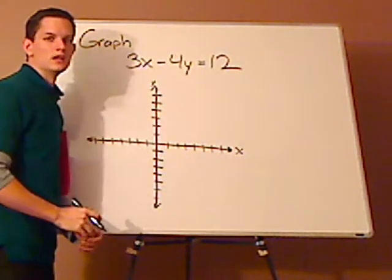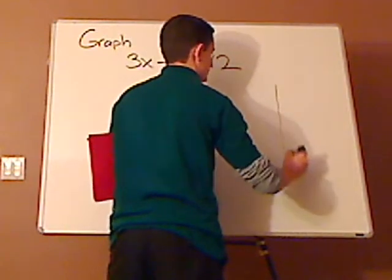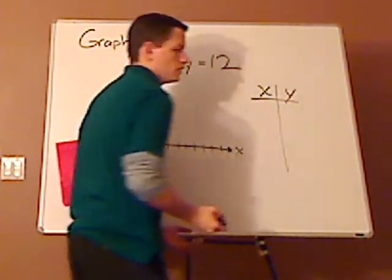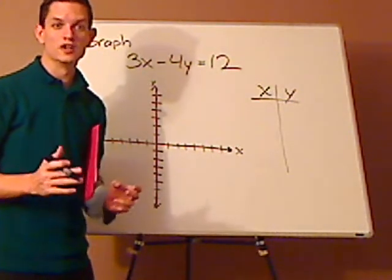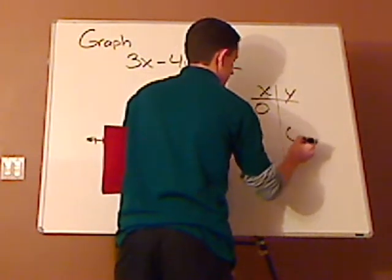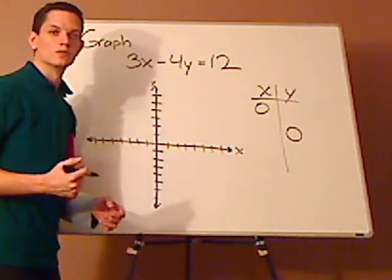This is what's called standard form. So, since it's in standard form, it's very easy to just plug in zeros. Zero for x and zero for y. When you do that, you're going to find the x and y intercepts.